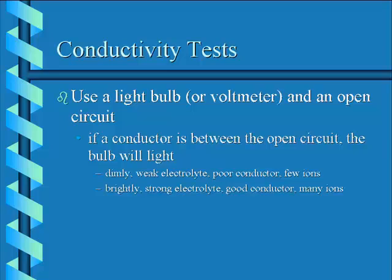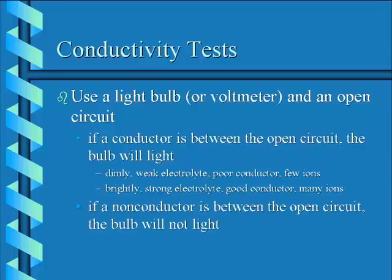This assumes that you have roughly equivalent concentrations in all cases. If there's a non-conductor put between the open circuit, the bulb will simply not light. That indicates that no ions are present.